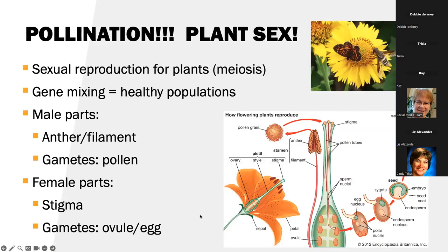So what is pollination? In essence, it's plant sex — it's the sexual reproduction for plants, i.e., meiosis, where we're splitting those gametes. Gene mixing means we have healthy plant populations, so pollination is absolutely critical. The male parts: we have the anther and the filament, and those gametes — half of the ploidy — are going to be in the pollen. The female: we have the stigma, and then the gametes are the ovule or the egg.